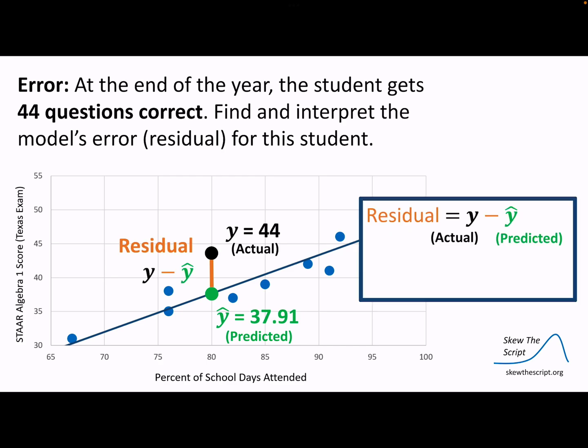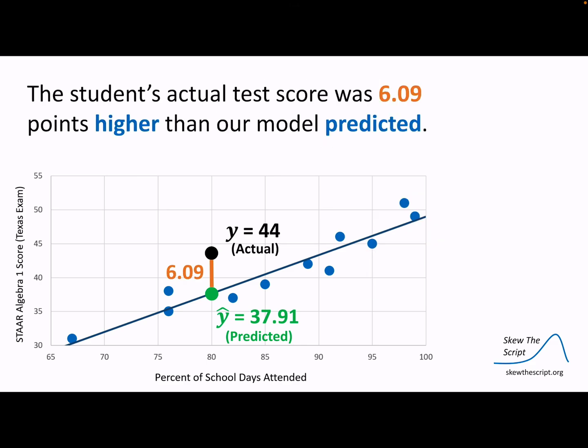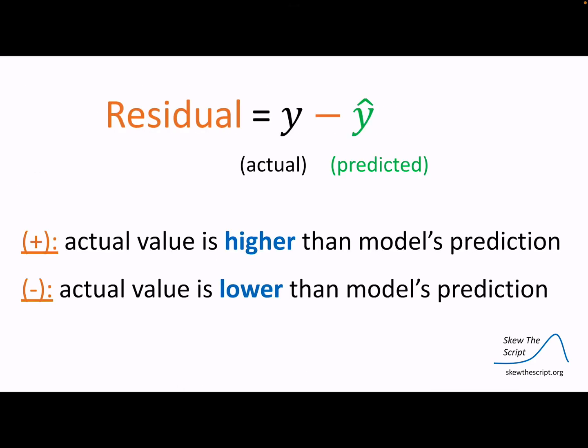The actual minus the predicted gives us the residual. So in this case, it's 44 minus 37.91, and so the residual here is 6.09. His actual test score was 6.09 points higher than our model predicted. So we make this prediction based on good data, but then things don't always live up to that or don't always follow that rule.